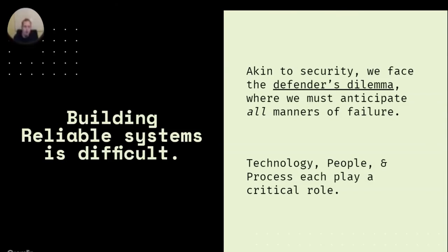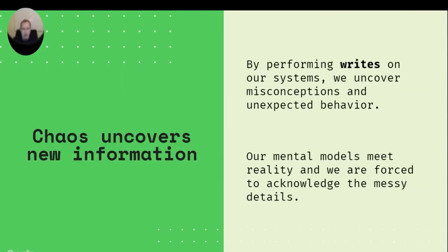One thing that separates chaos engineering from the observability or APM space is that we get to perform writes on the system. A lot of times we're observing how the system behaves in steady state. But by causing writes — causing changes — we're actually uncovering misconceptions, things not working the way we expect. We can see the deviation from the happy case and explore parts of our code we haven't seen otherwise. That read-versus-write aspect can be more impactful and allows us to better understand these other pieces.